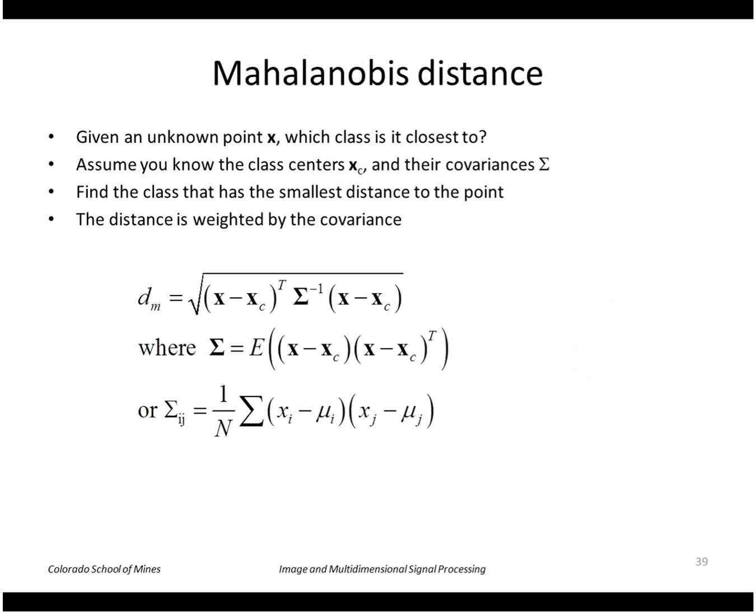That brings us to that distance called the Mahalanobis distance. So given an unknown point x, which class is it closest to? Assuming I know the class centers and their covariances, I compute the distance weighted by the covariance. This is the exponent of that Gaussian PDF function.